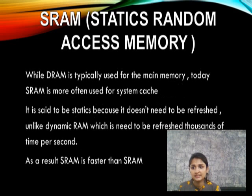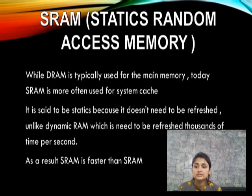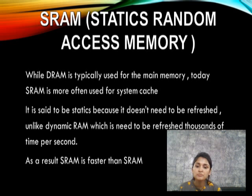SRAM, or Static Random Access Memory, is typically used for the cache of the system. It is a static device because it does not need to be refreshed. In contrast, DRAM needs to be constantly refreshed — thousands of times per second.